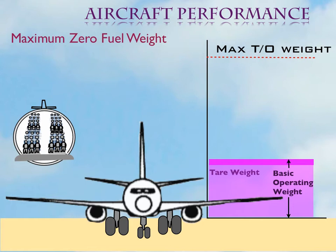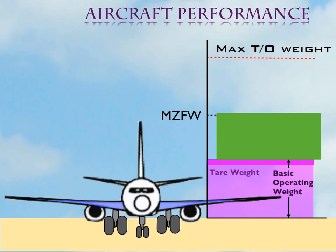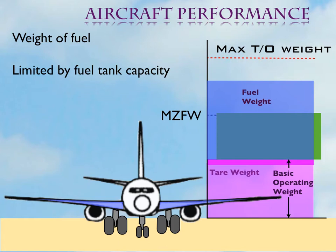We can define the maximum zero fuel weight of the aircraft as the basic operating weight plus the payload. Once the aircraft is loaded with payload, the next is the weight of the fuel. Usually the maximum quantity of fuel is limited by the capacity of the fuel tanks of the aircraft. Otherwise, the quantity of fuel to be uplifted for the flight will depend on several factors that have been defined by regulation.